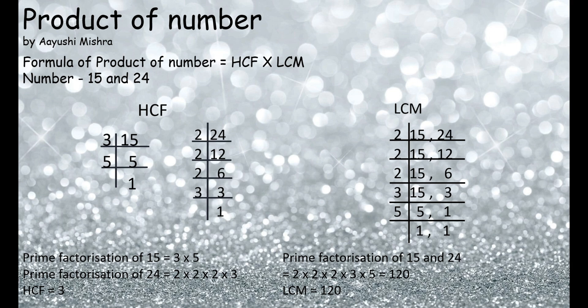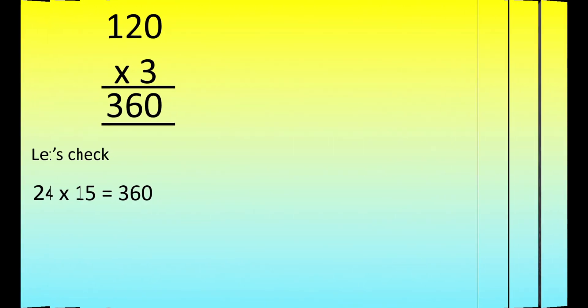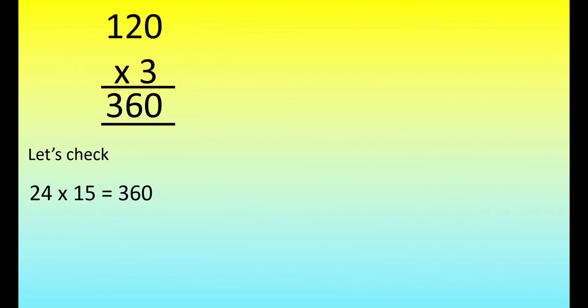The LCM of 15 and 24 is 120. When we multiply 120 by 3, the answer will be 360. Let's verify: multiplying 24 and 15 also gives us 360.